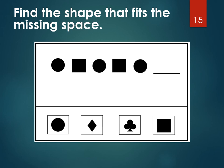Here's your last question of the test. Find the shape that fits the missing space. We have a circle, a square, a circle, a square, a circle — and what should come next? Can you point to the correct shape? Did you point to this one? It's the square. If you pointed to the square, you are correct. That's very good.